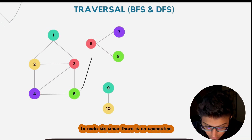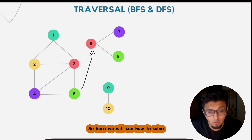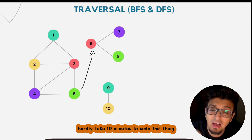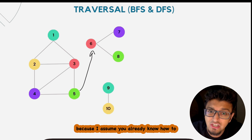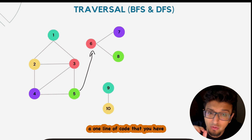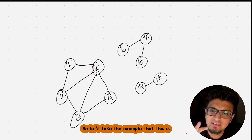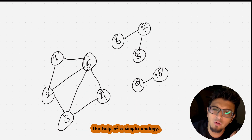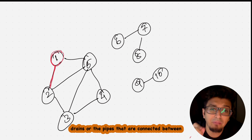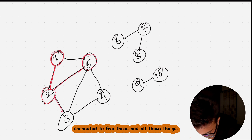The problem arises when the graph is not connected. For example, you cannot traverse from node five to node six if there is no connection between them. To explain how to solve this, let's use an analogy: think of nodes as potholes and edges as pipes or drains connected between them.